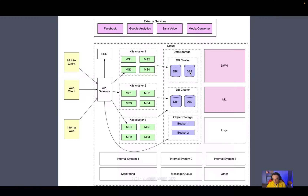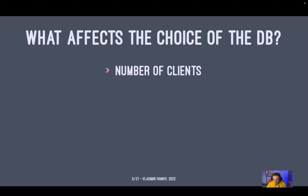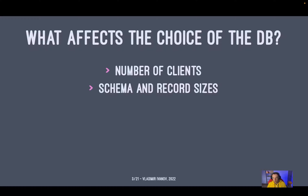In order to pick a proper database that will handle the load of our system, we need to understand what is there to pick. What affects the choice of database? First, it's the number of clients — whether we're building a system for a hundred internal clients or a worldwide system with hundreds of millions of users every month. Another aspect is schema and record sizes. Relational databases usually require a schema — tables, data types, and so on — while NoSQL databases like MongoDB allow you to put any data into their collections.